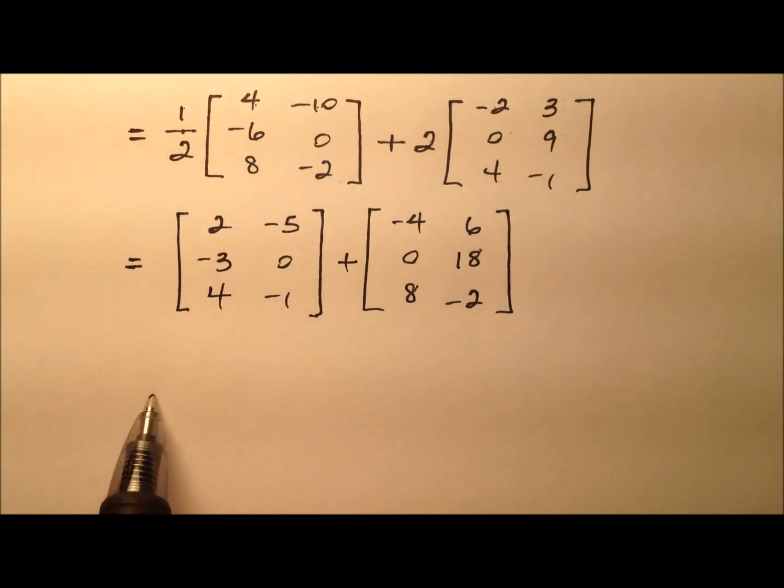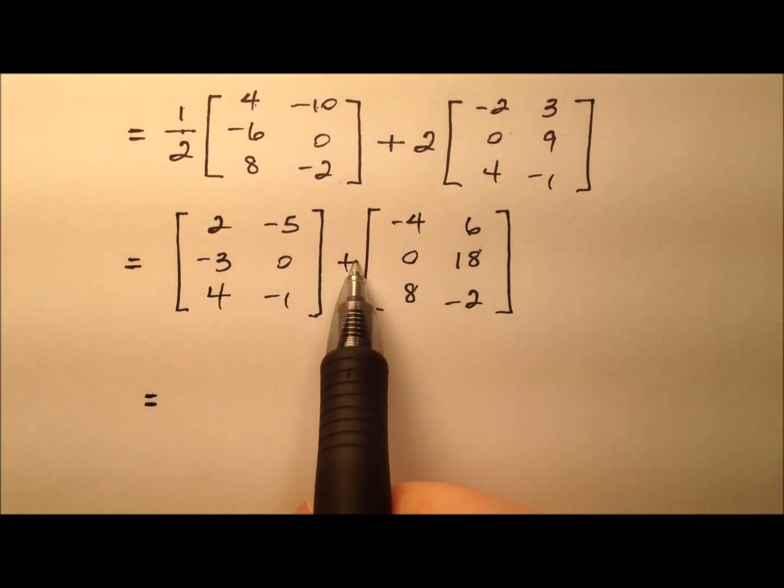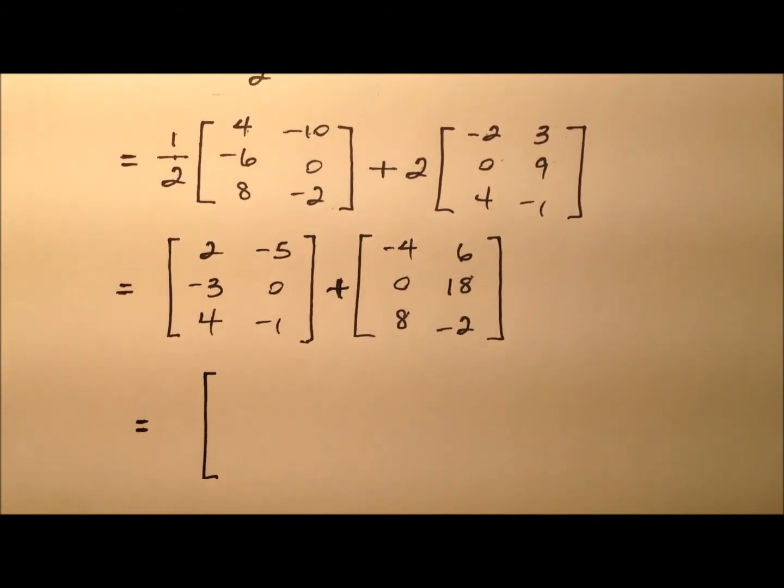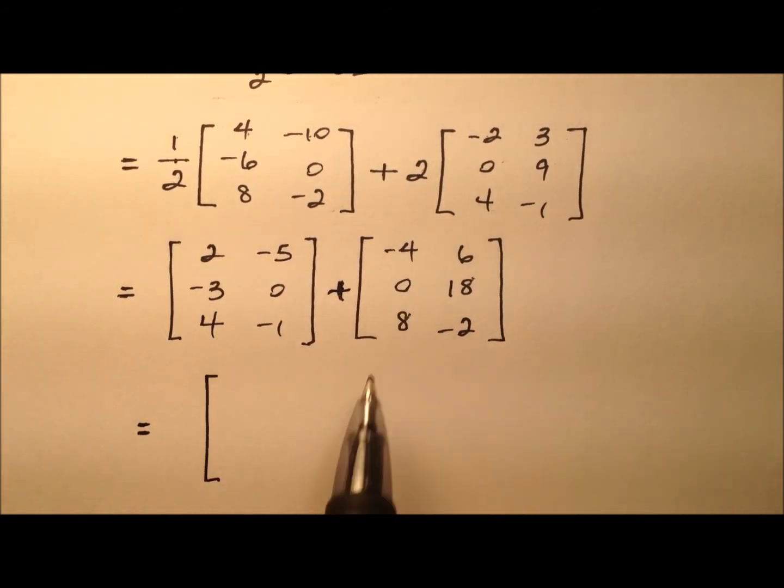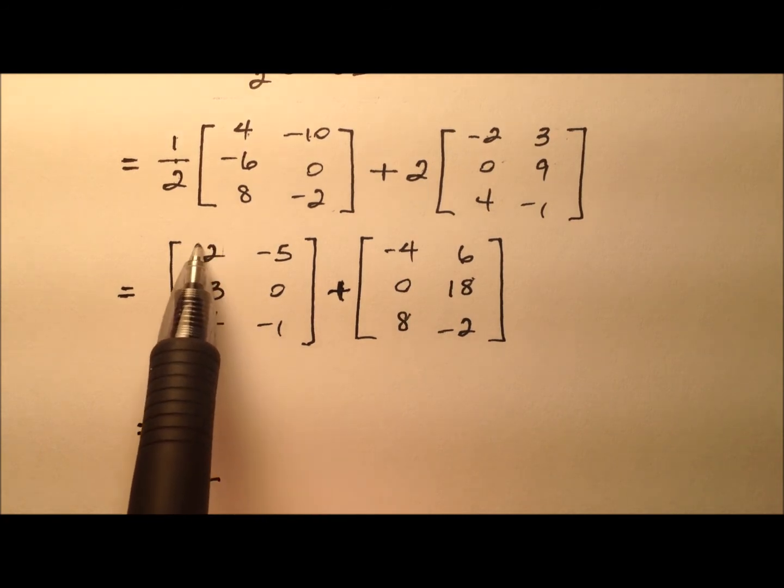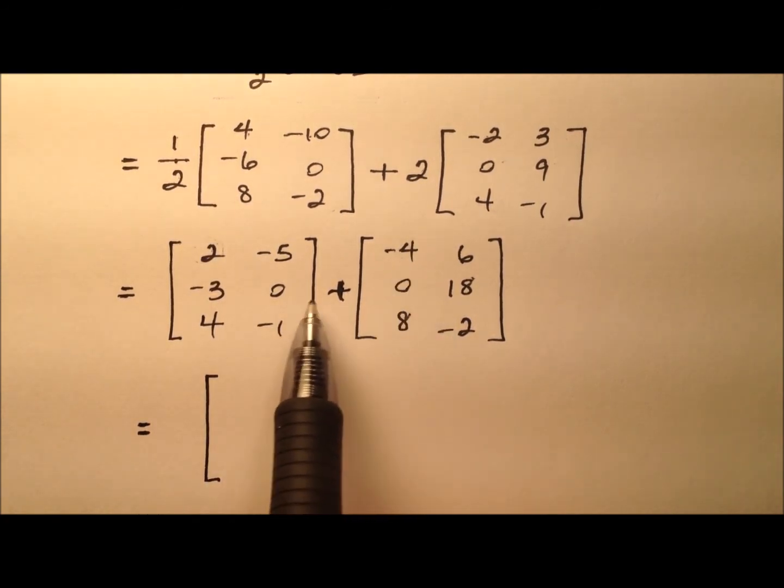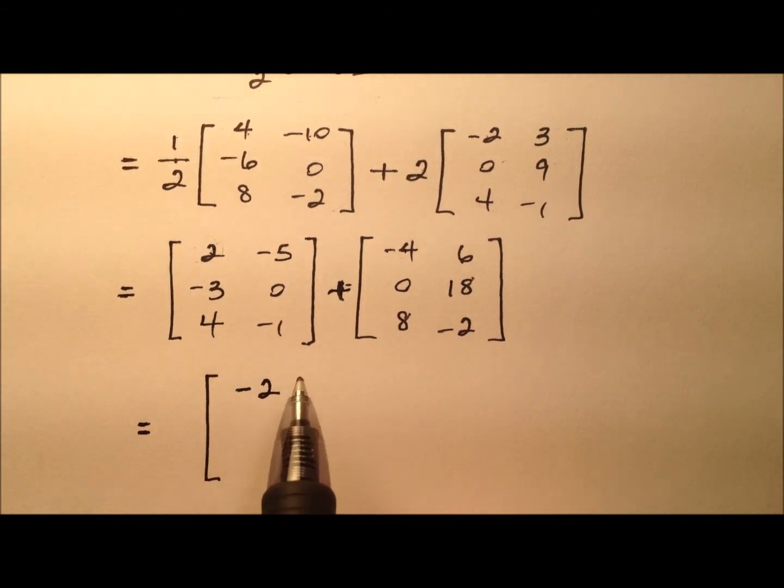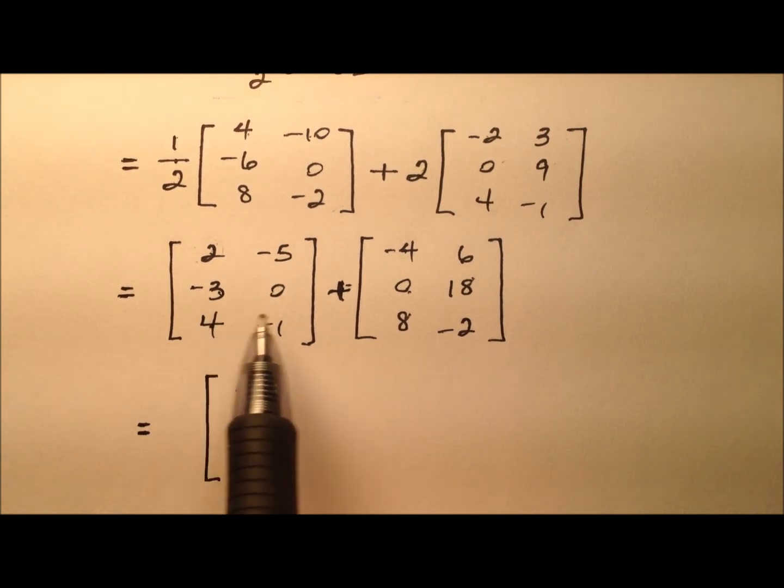All right, so let's go ahead and finish this problem up by doing the addition. So when we add matrices, we're going to be adding corresponding entries. So first row first column, first row first column, we're going to add them up. So 2 plus a negative 4, that'll be negative 2. Negative 3 plus 0, that's easy, that'll be negative 3. And 4 plus 8, that guy will be 12.